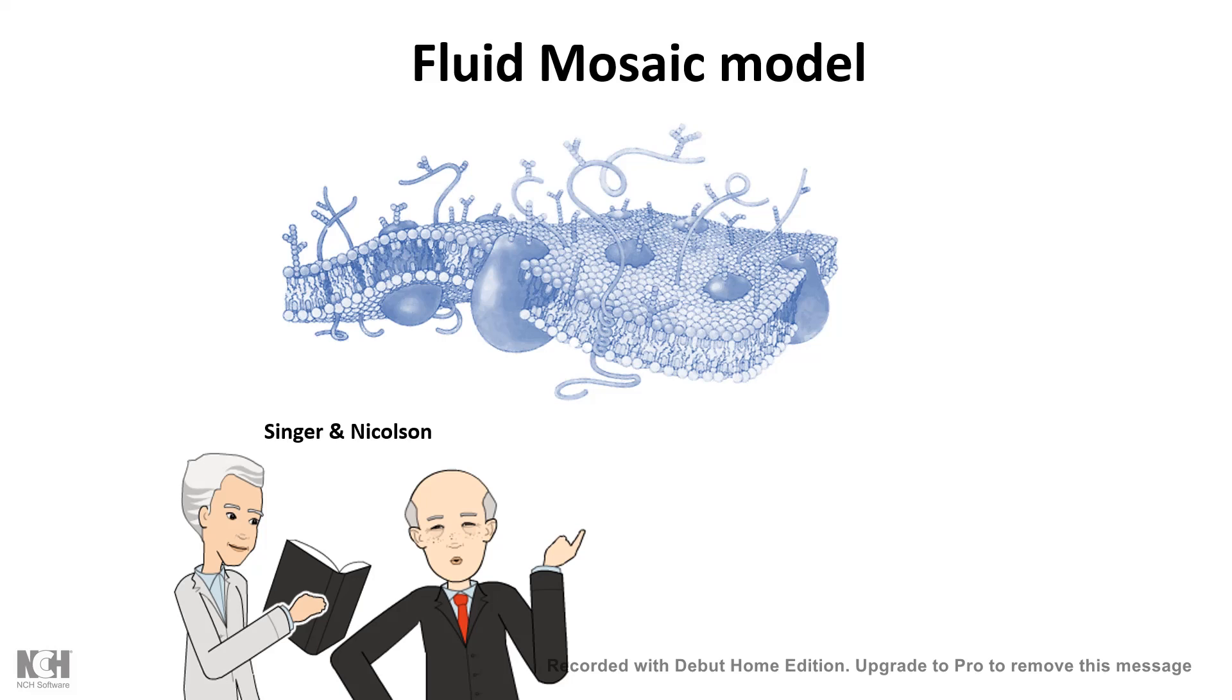So the fluid mosaic model states that the membrane is mostly lipid and membrane has two bilayers. So membrane has a phospholipid bilayer. The basic composition of the membrane is nothing but the phospholipids. Phospholipids are the chunk of the membrane.